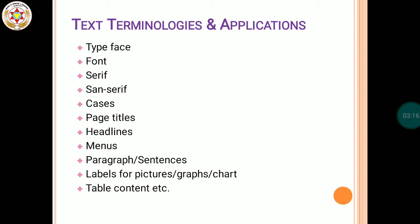Then we have Font. Font basically refers to how we represent a particular character — its size, its color, and many other characteristics. So font encompasses various attributes used to define the appearance of text.